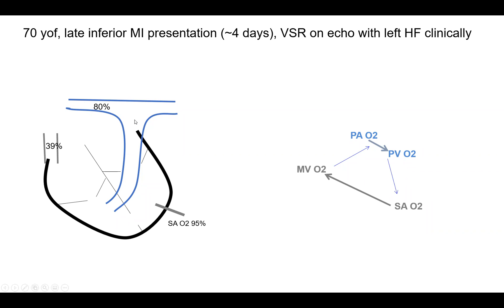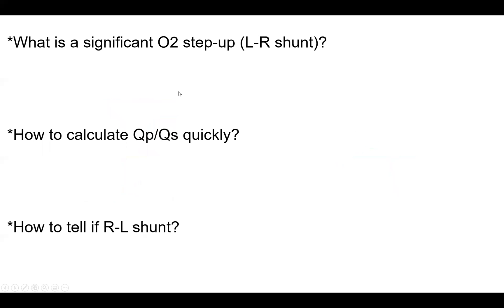I want to give you the numbers and discuss how to do the math. Her SVC saturation is 39%, her PA saturation is 80%, and her arterial O2 saturation is 95%. Based on those three simple numbers, I want you to come up with answers to three questions.